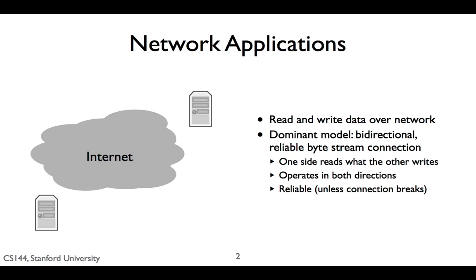For example, think of using a web browser to read a magazine. The server is run by the publisher, which has all of the magazine articles, and it might also have all the articles from past issues. As articles are corrected or added, you can immediately see the newer versions and newer content. The entire back catalog of articles might be too much for you to download, so you can load them on demand. If you didn't have a network, then you'd need someone to send you a DVD or a USB stick with the latest issue.